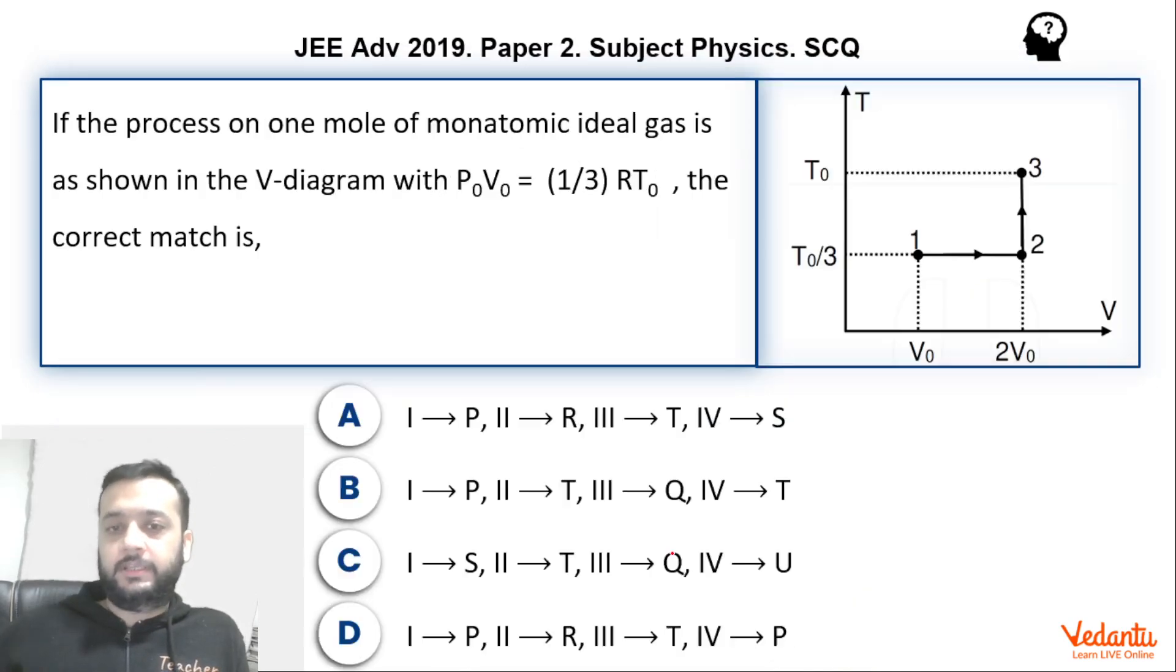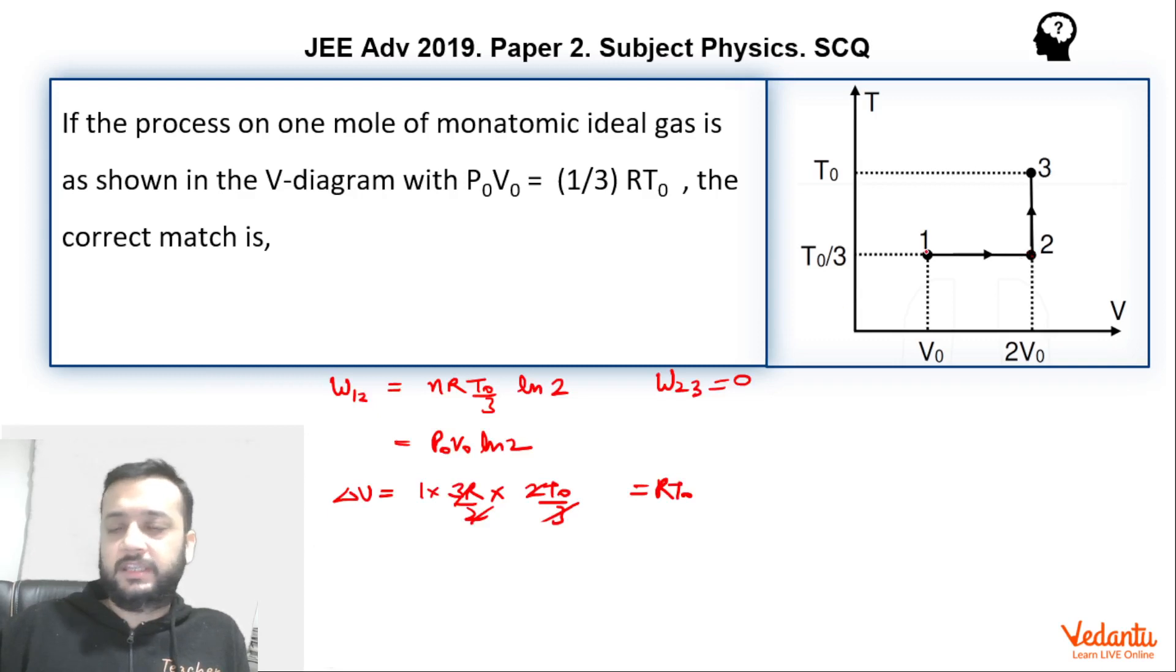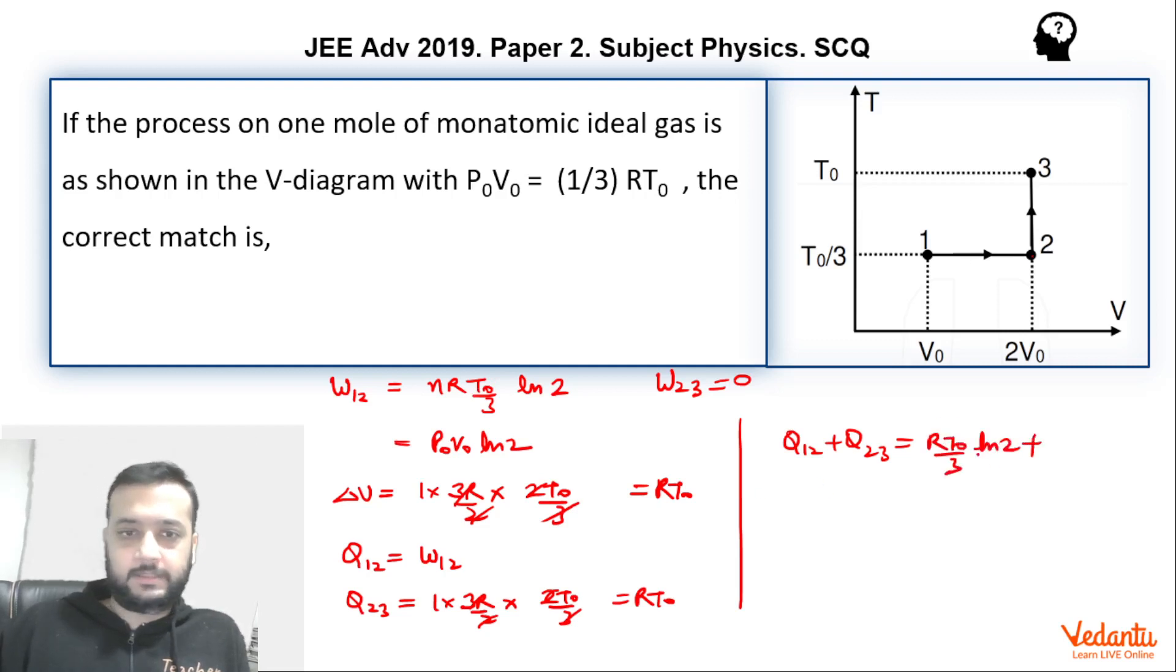Here we have to find heat absorbed in 1, 2, 3. Now for isothermal process there is no change in the internal energy. So we can say that whatever is the work done itself is the heat absorbed. So Q12 will be nothing but W12. For Q23, we can use n CV delta T. So from here to here temperature changes by 2T0/3. So we can say that this will become RT0. So total Q12 plus Q23 will come out to be RT0/3 ln 2 plus RT0.